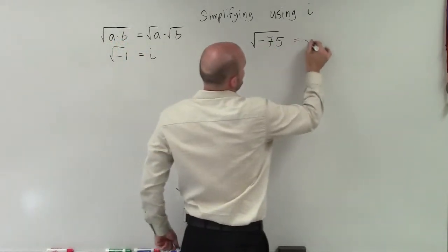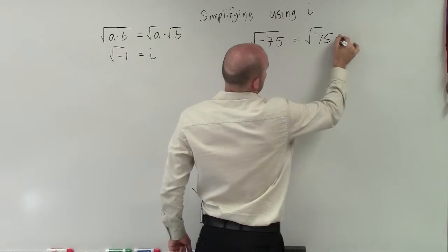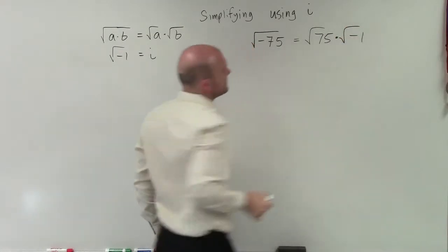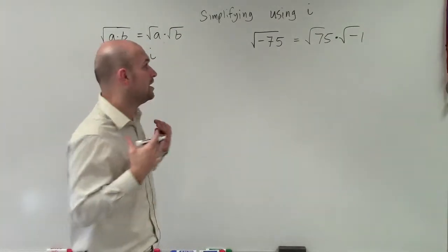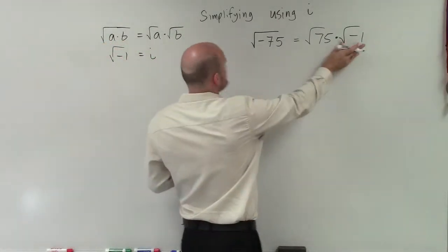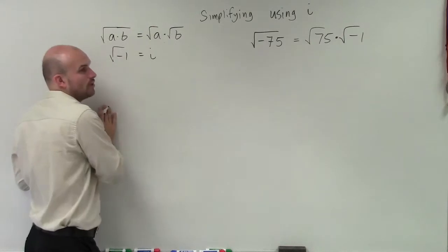So I can rewrite this as the square root of 75 times the square root of negative 1. Now what I can do is work on simplifying each one of these radicals by themselves. So I know that the square root of negative 1, that's going to equal i.